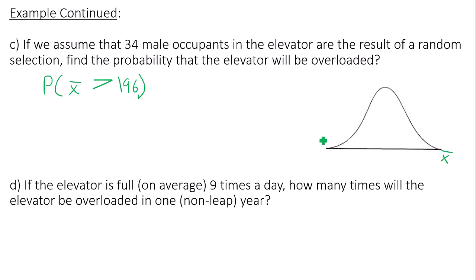So some things you have to know. The mean of my sampling distribution or the mean of my sample means is the same as the mean of my original information, so that would be 182.